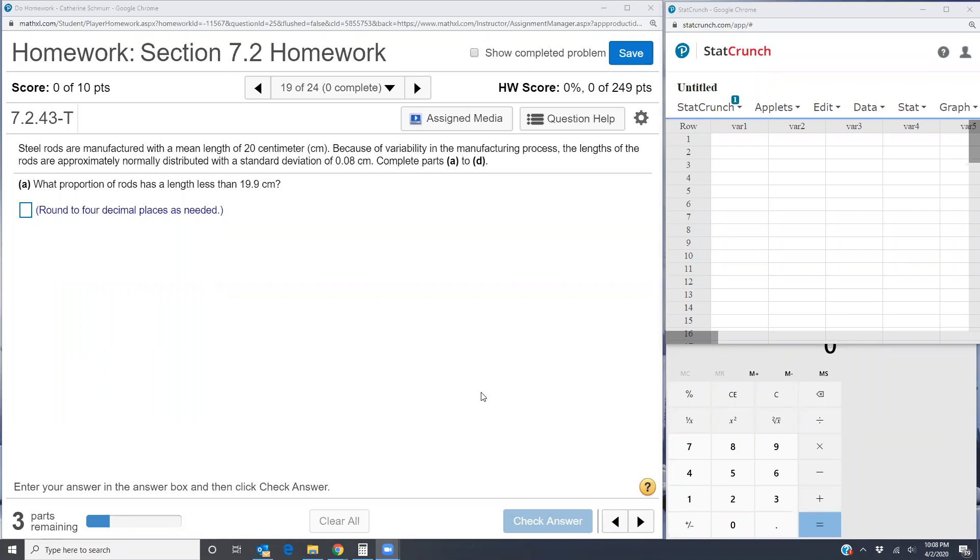This is section 7.2 problem 19 from the statistics homework. We're told that steel rods are manufactured with a mean length of 20 centimeters. Because of variability in the manufacturing process, the length of the rods are approximately normally distributed with a standard deviation of 0.08 centimeters.